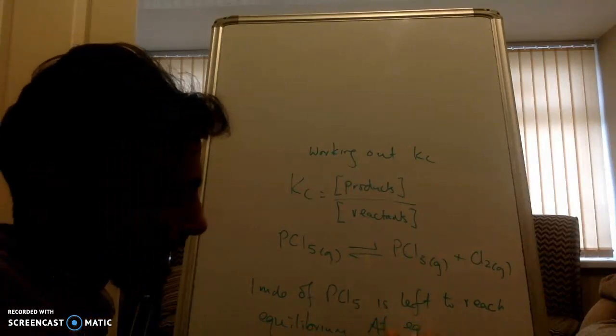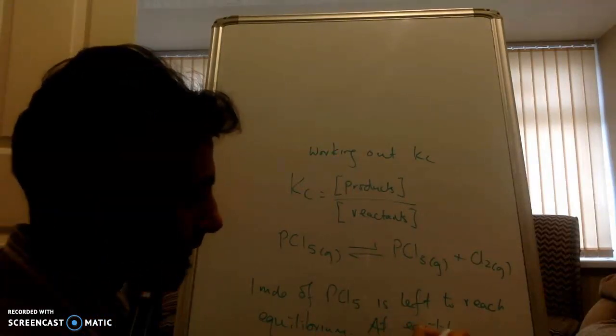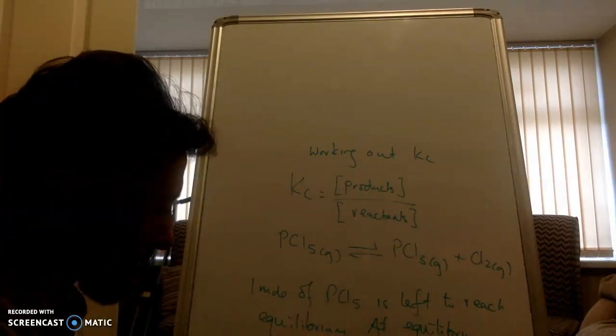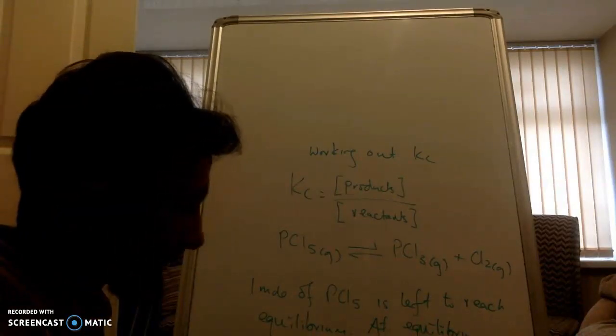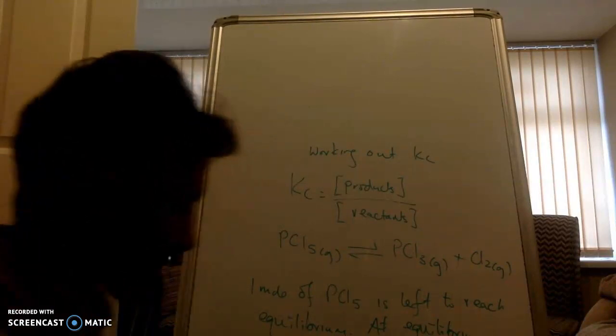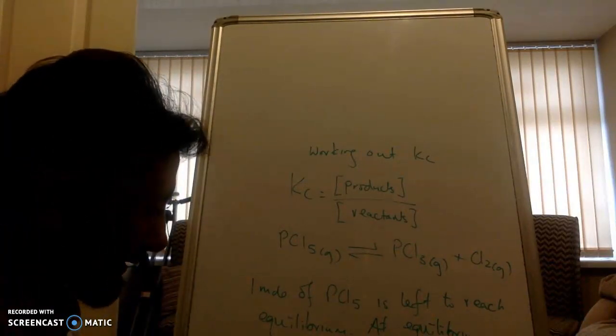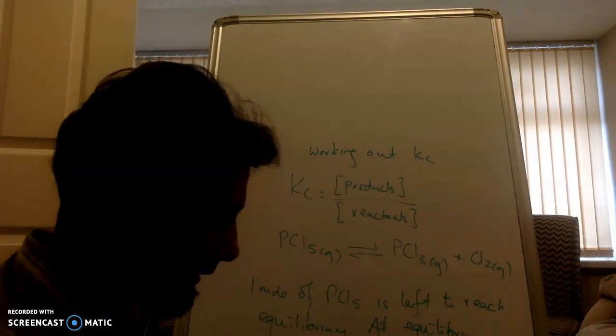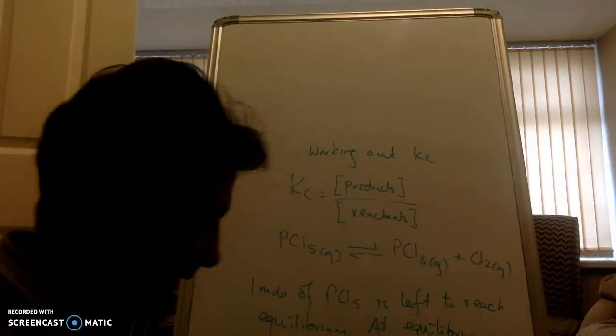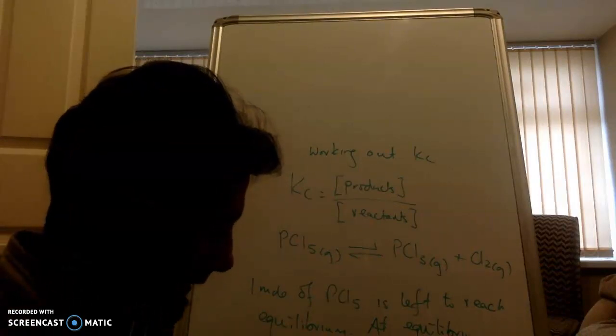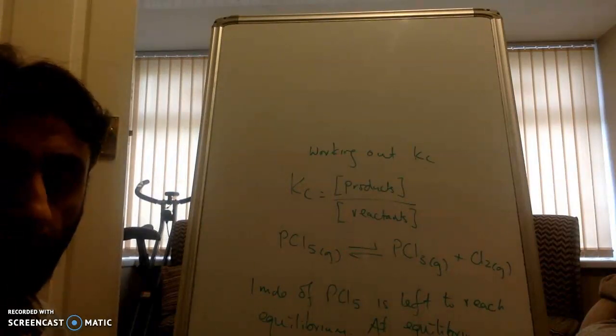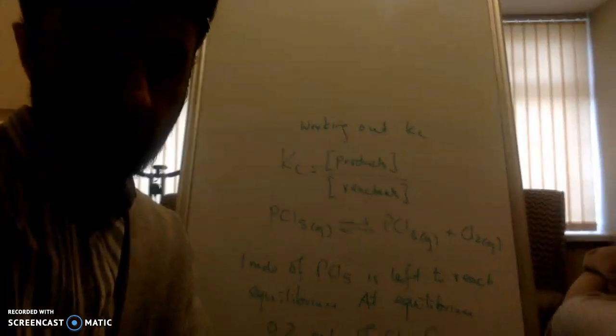At equilibrium, 0.2 moles of chlorine forms in a vessel of 500 cubic centimeters. So, calculate Kc.